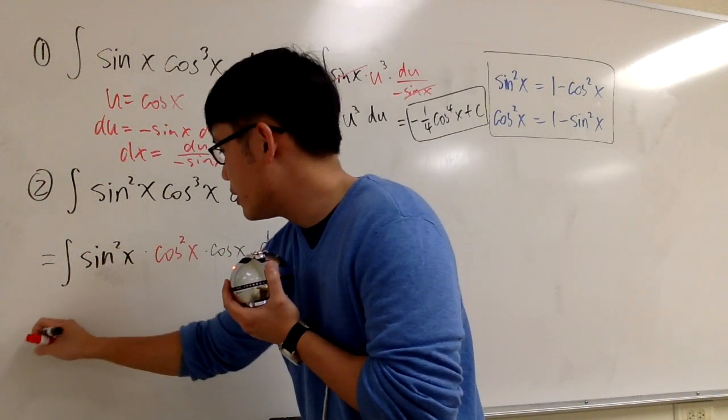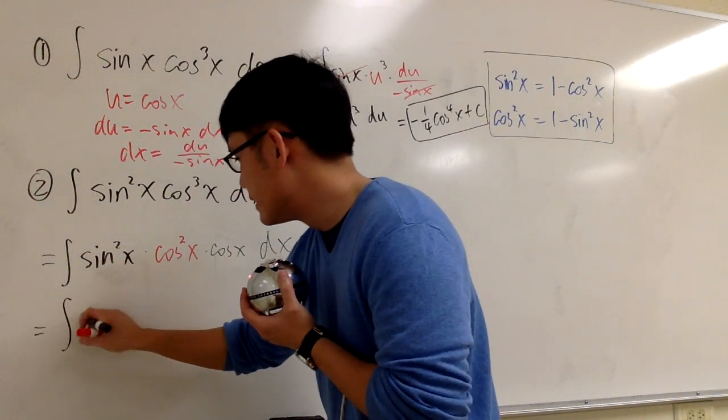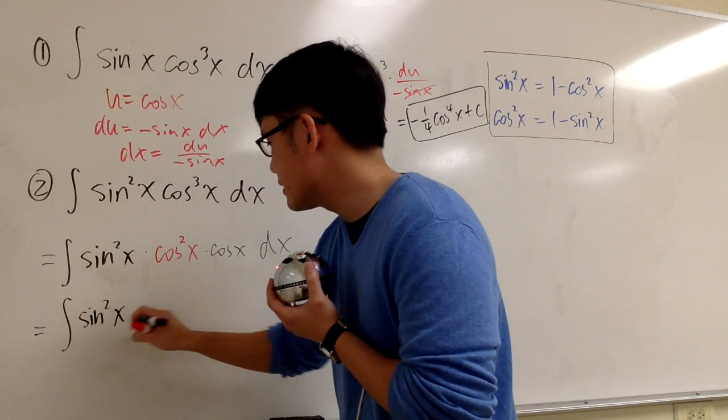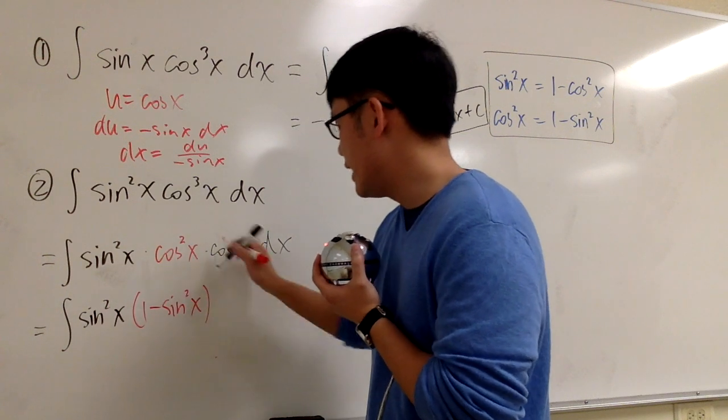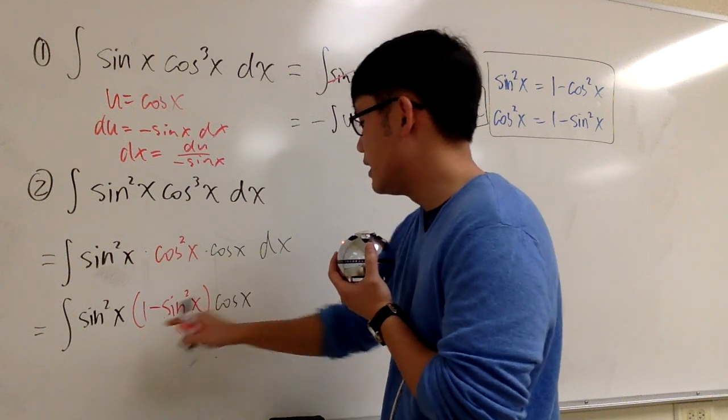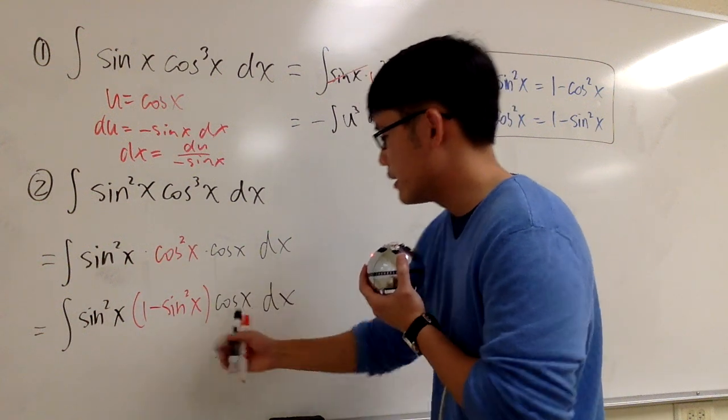This right here is going to be the integral of sine squared x. This is 1 minus sine squared x. And then we have the cosine x on the outside. Right here. The product of the sines.